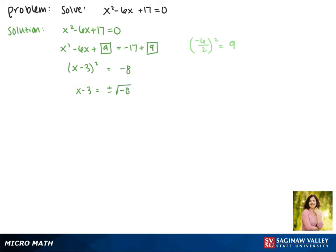This means there are no real solutions to our equation because we can't take the square root of a negative, but we can find the complex solutions by breaking up the square root of negative 8 into the square root of 8 times the square root of negative 1.